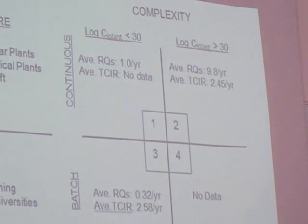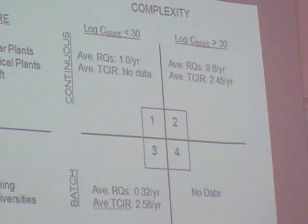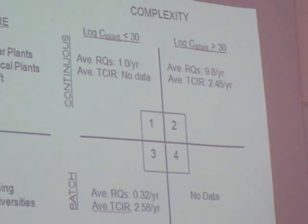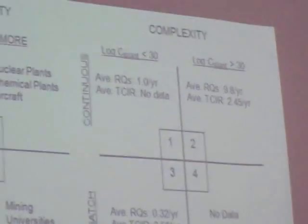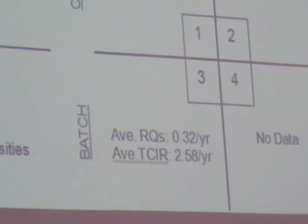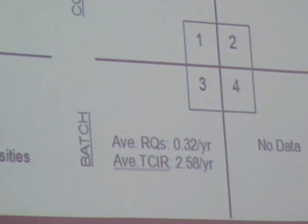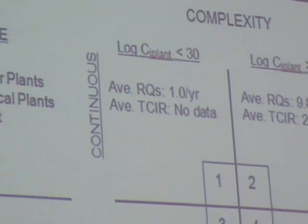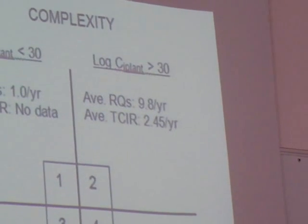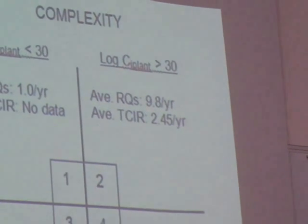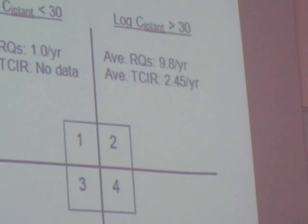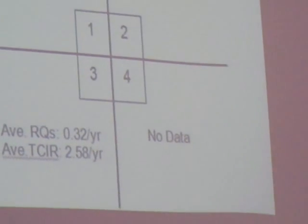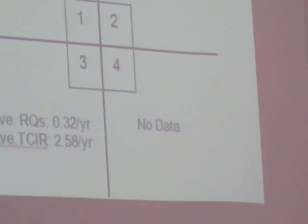And what you find is that these loosely coupled, low-complex systems have about a third of an accident per year, where the more tightly coupled but still not very complex refineries have about an accident every year. And the really complex, tightly coupled systems have ten times more accidents, right? So you have about ten accidents per year in these complex type of systems.